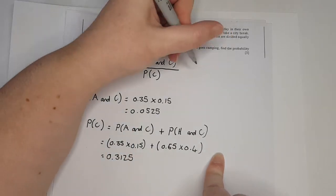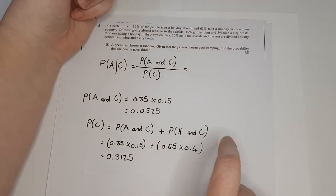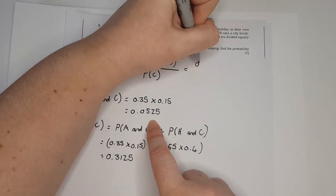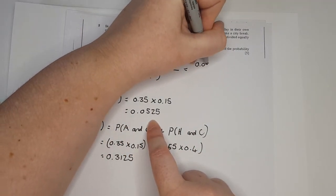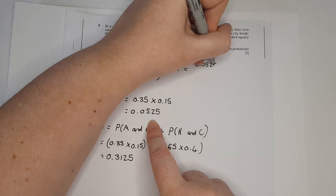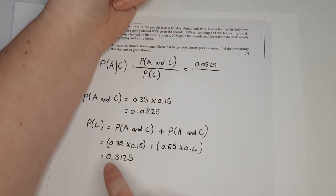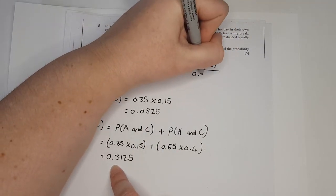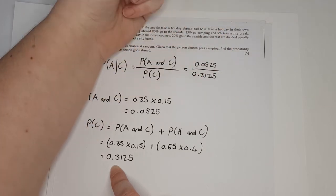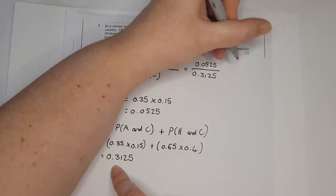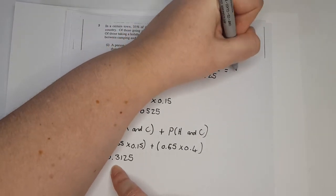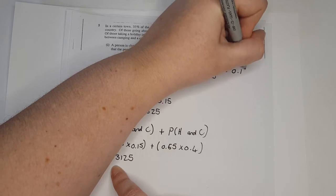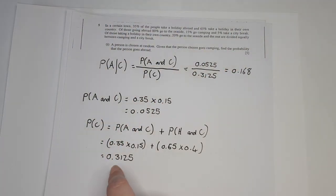So P(abroad | camping) = 0.0525 divided by 0.3125, giving a final answer of 0.168.